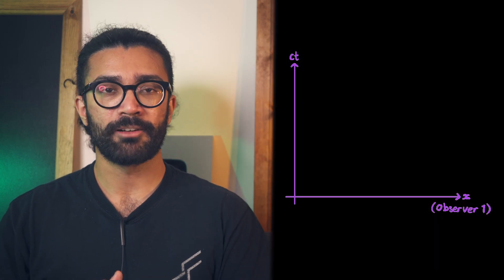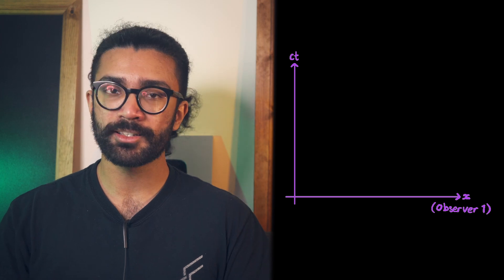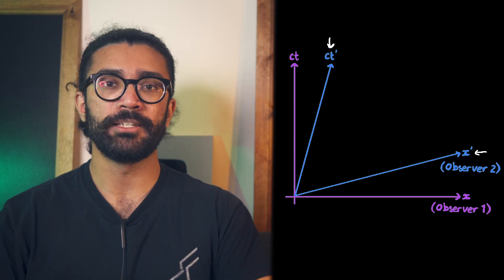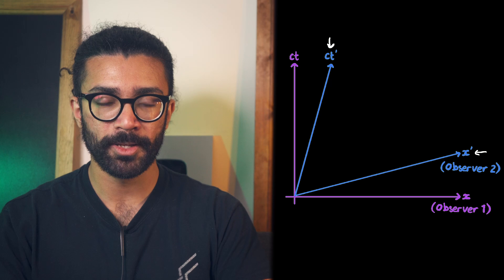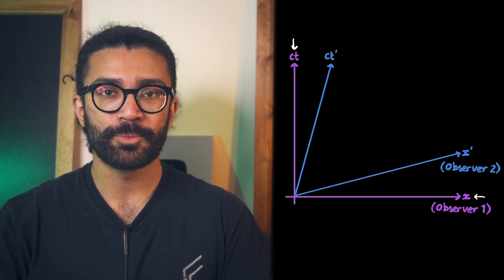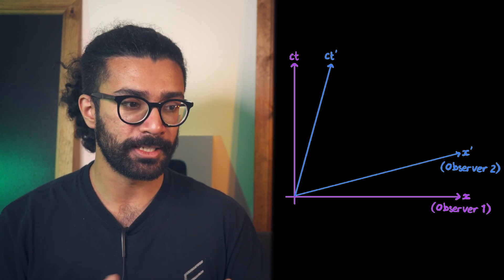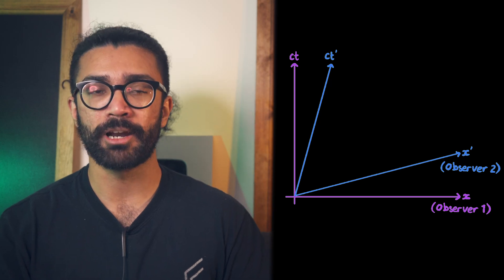Interestingly, we can create space-time diagrams for two different reference frames on the same graph. Because two observers or two different reference frames will always measure the speed of light to be the same value and as a result they experience space and time slightly differently to each other, a space-time diagram for an observer that is moving relative to us can be drawn like this. We draw these axes for the reference frame moving at a speed v relative to our original reference frame, which has these axes.